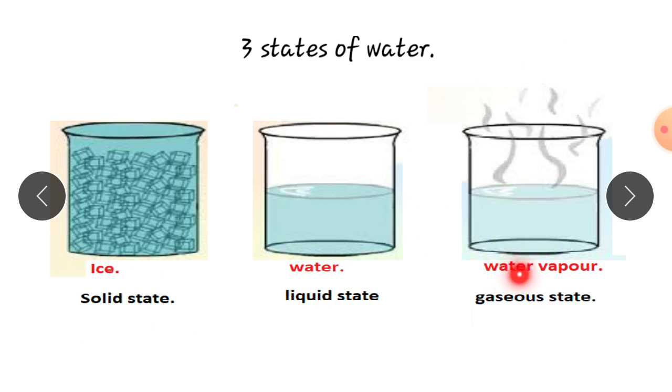Water vapors. This is gaseous state. Understood? Solid state, liquid state and gaseous state. These are the three states. In solid state water is in ice form, in liquid water, in gaseous state water vapors.